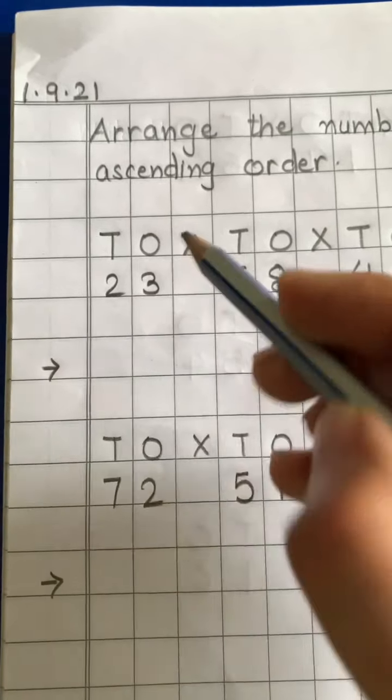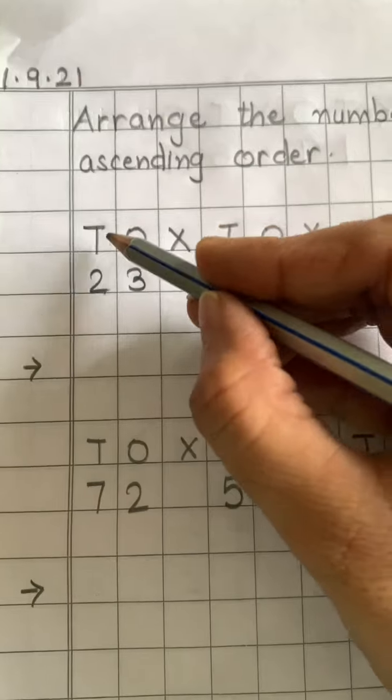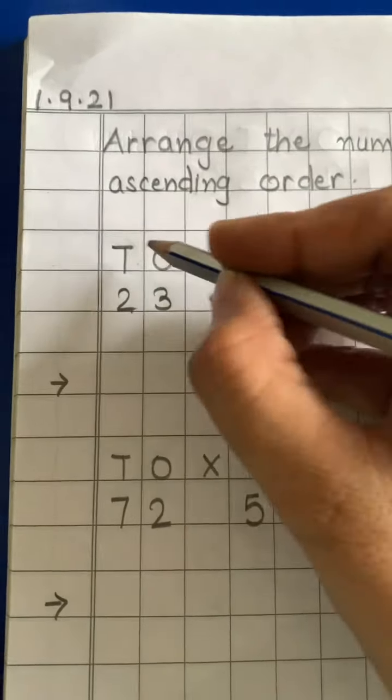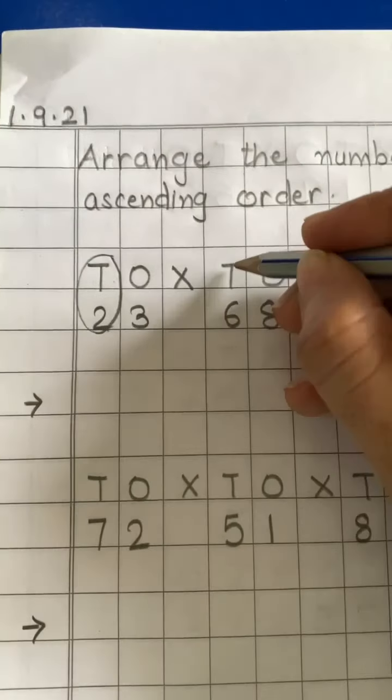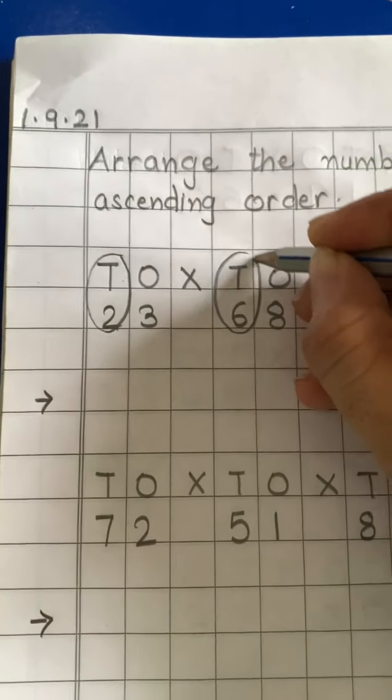That is written under 10th place. Jo 10s ke niche number likha hai, hum us ko circle karenge. Sabhi numbers jo 10th place pe hai, circle that number.